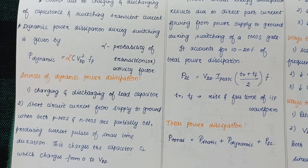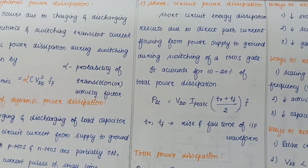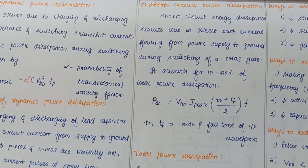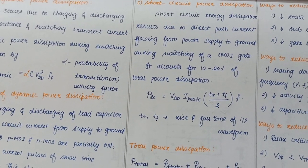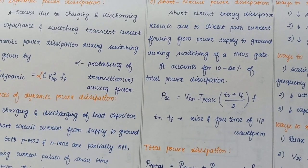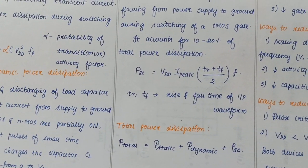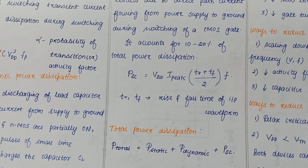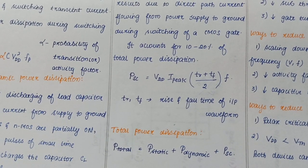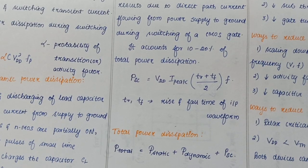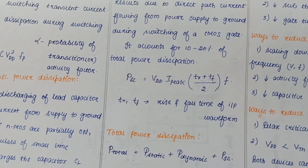Short circuit power dissipation is similar to dynamic power. It results from direct path current flowing from power supply to ground during the switching of a CMOS gate. Total short circuit power contributes 10 to 20%. The formula is Psc equals VDD times Ipeak times (Tr plus Tf) by 2 times F, where Tr and Tf are rise time and fall time of the input signal, Ipeak is the peak current, and F is the frequency.